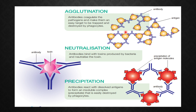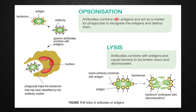Now, what is opsonization? Antibodies combine with the antigens — the antibody binds the yellow antigen particles — so that phagocytes can recognize the antigens and destroy them. The phagocytes trap the bacterium that has been identified by the antibody marker. Upon binding, the antibody-antigen complex acts as a marker, allowing phagocytes to easily recognize and destroy them.